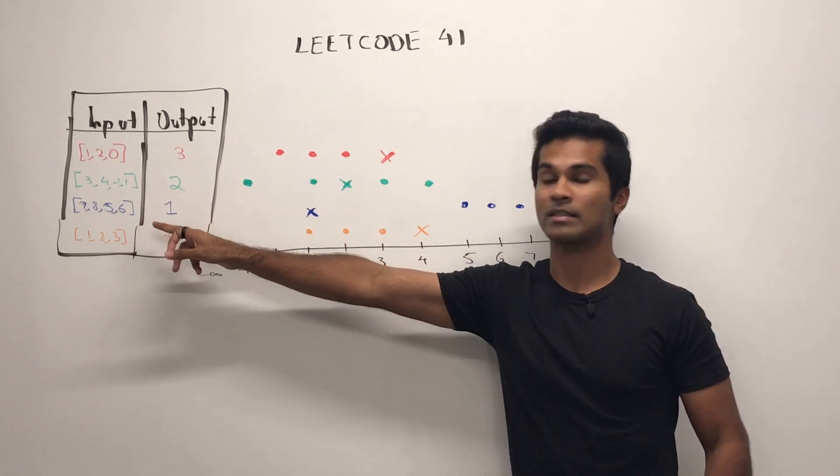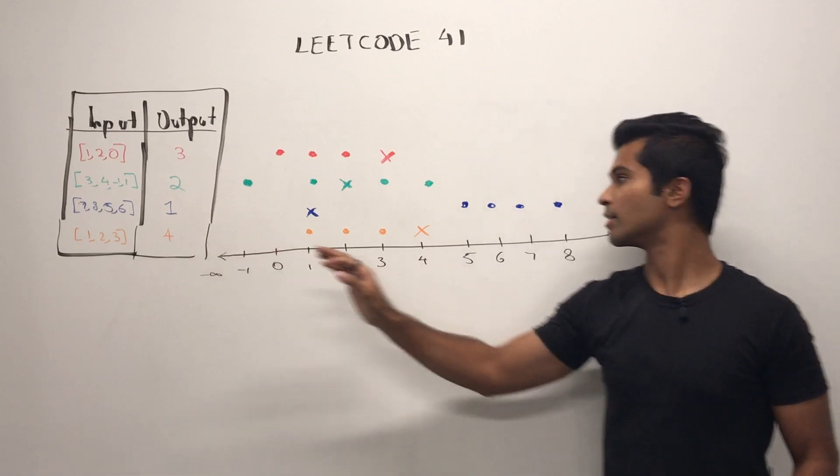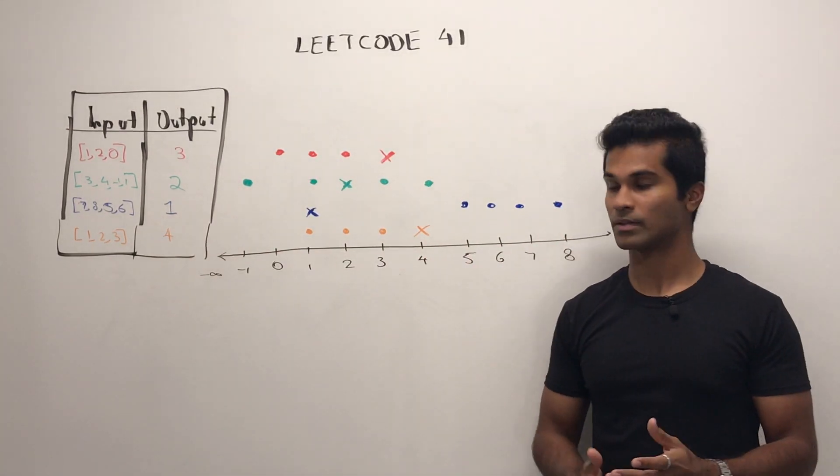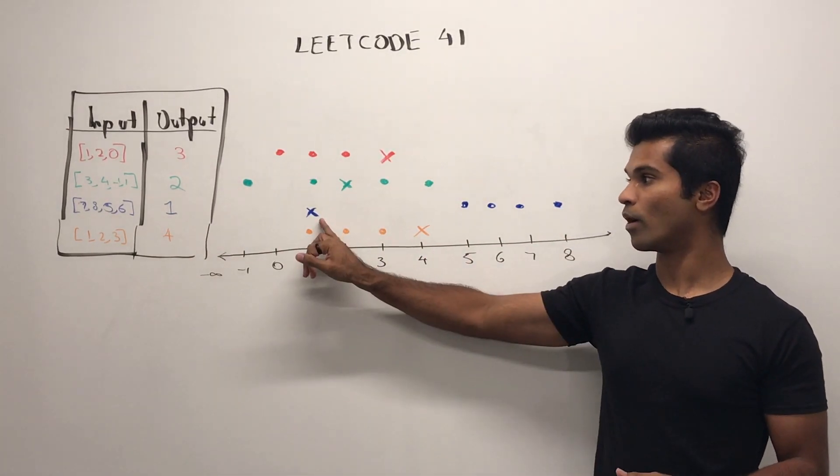And in another example we have 5, 6, 7, 8 — but the first missing positive is 1.